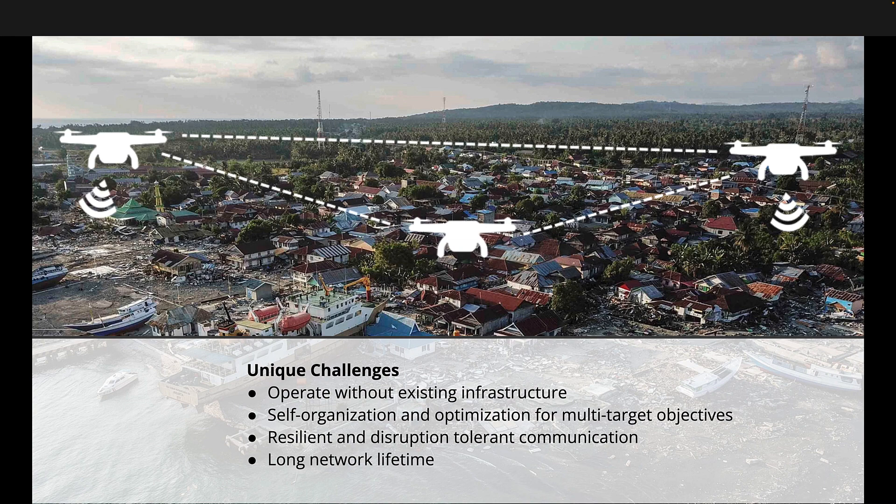When deploying UAVs for communication purposes, we face a few unique challenges. They need to be able to operate without existing infrastructure, as cell towers and Wi-Fi connections might break down. So we have the remote operation link to the UAV itself, and then we want to provide communication services to the people on the ground.